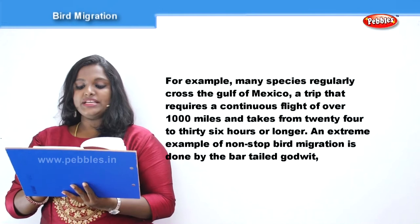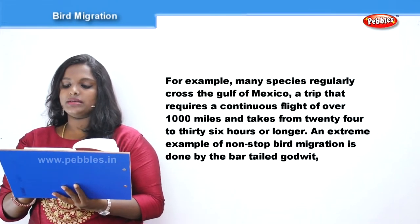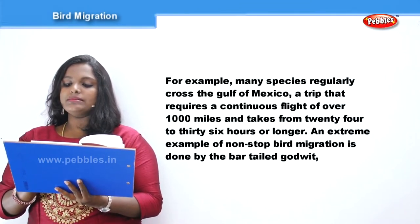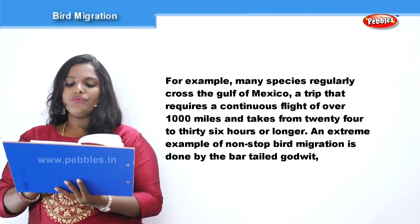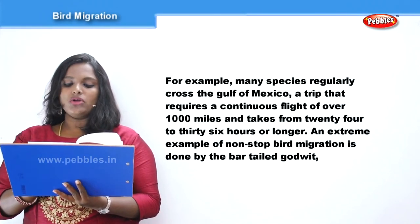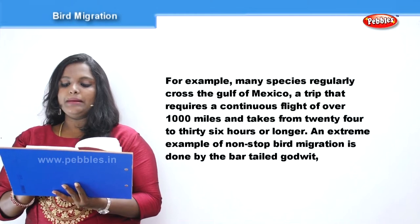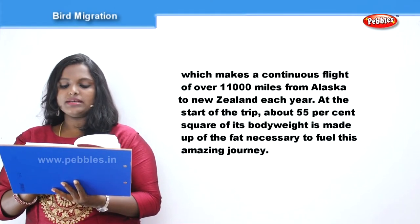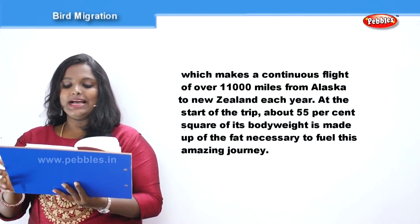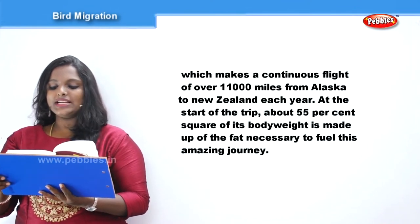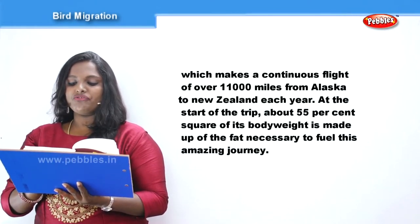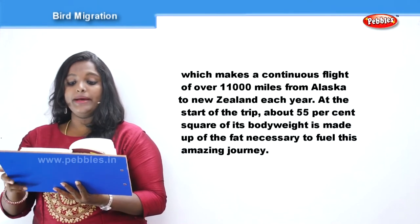For example, many species regularly cross the Gulf of Mexico, a trip that requires a continuous flight of over 1,000 miles and takes from 24 to 36 hours or longer. An extreme example of non-stop bird migration is done by the bar-tailed Godwit, which makes a continuous flight of over 11,000 miles from Alaska to New Zealand each year. At the start of its trip, about 55% of its body weight is made up of the fat necessary to fuel this amazing journey.